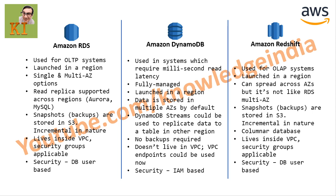Recently Amazon introduced VPC endpoints for DynamoDB. Earlier, applications always accessed DynamoDB via the public network. With VPC endpoints, you can reach DynamoDB using Amazon's internal private network, which ensures better security and better bandwidth between your instance and DynamoDB. There's a detailed tutorial on VPC endpoints on the channel if you want to learn how to set it up.